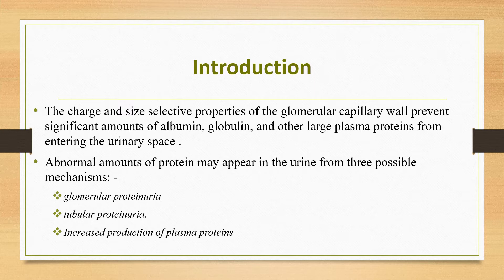Abnormal amounts of protein may appear in the urine from three possible mechanisms. The first is glomerular proteinuria, which occurs as a result of disruption of the glomerular capillary wall. The second is tubular proteinuria, which appears when tubular injury or dysfunction leads to ineffective reabsorption of mostly low molecular weight proteins. The third is increased production of plasma proteins — in conditions like multiple myeloma, rhabdomyolysis, or hemolysis — which overwhelms the absorptive capacity of the proximal tubule, resulting in increased urinary protein.